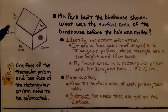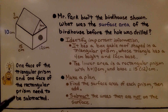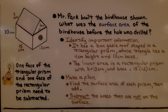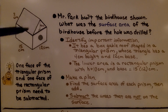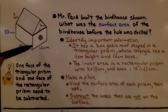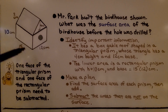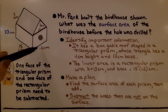Mr. Park built the birdhouse shown. What was the surface area of the birdhouse before the hole was drilled? We identify the important information: it has a gable roof shaped as a triangular prism whose triangle has a height of 4 cm and a 12 cm base. The lower area is a rectangular prism with a height of 10 cm and a base that is 15 by 12 cm.